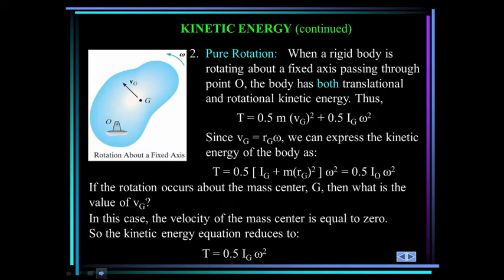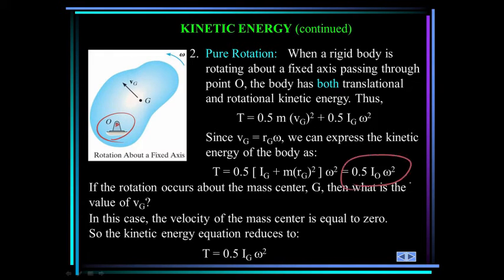The other simplification occurs if you're in pure rotation — if you're rotating about a fixed point O, then the kinetic energy becomes one-half the moment of inertia about O times omega squared. Remember to use the mass moment of inertia about O there.